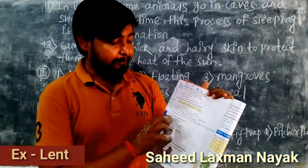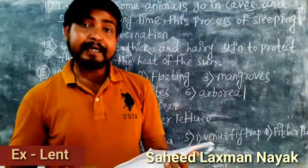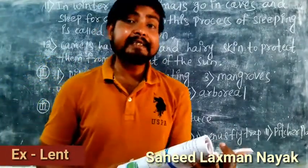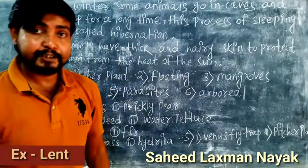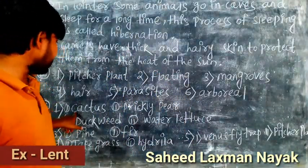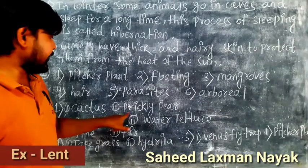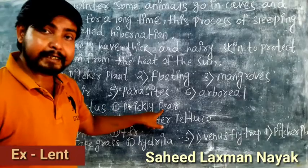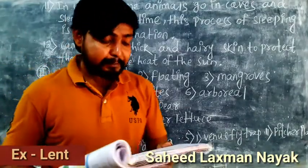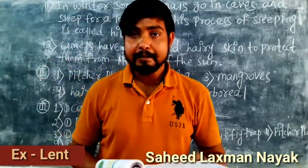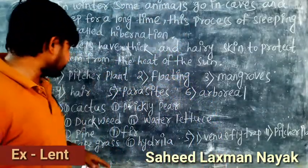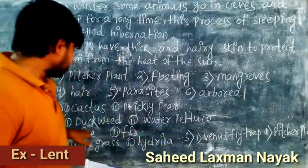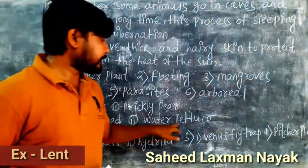Section three: give two examples of plants of each type. Number one — plants growing in desert areas: cactus and prickly pear. Number two — plants growing in water: duckweed and water lettuce.